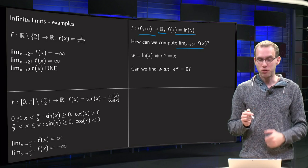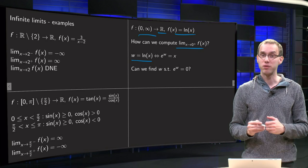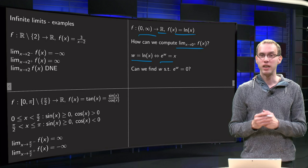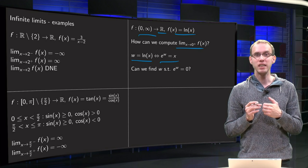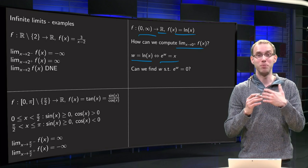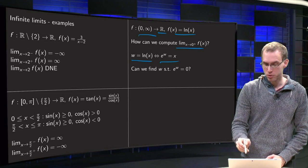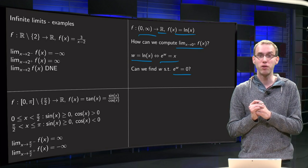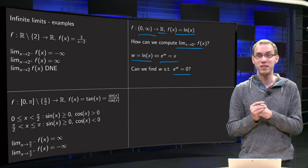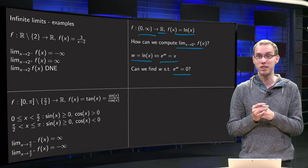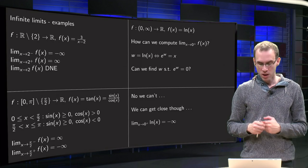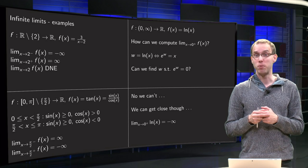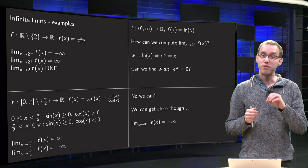So if we try to compute that, well we know if w equals the log of x, then taking exponents left and right, then we know e to the power of w equals x. So the question is, we want x to be very close to 0, so can we find w such that e to the power w equals x equals 0, or 0 from above, a number slightly bigger than 0? Can we find w such that this equation is satisfied? Well, no we can't, because the exponential function is always positive. But we can get very close to 0, though,